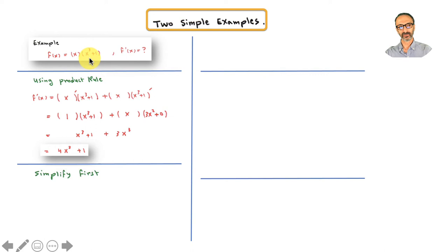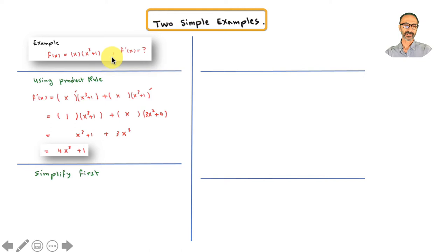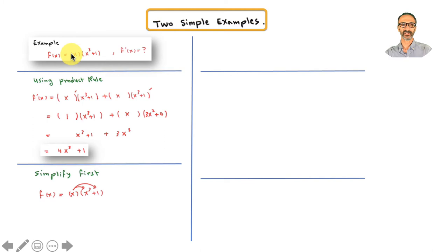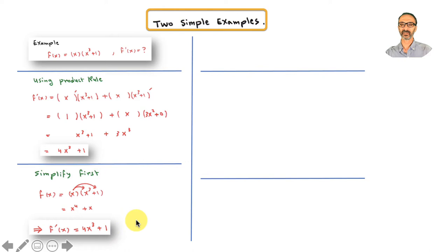Now, you might ask: do I have to use the product rule? In this case you don't, but if it says use the product rule, use it. To verify: distribute to get x to the fourth plus x. The derivative of x to the fourth is 4x cubed, and the derivative of x is 1 — same answer. Of course it has to be the same answer; nothing is wrong with that.